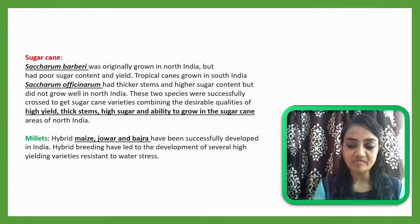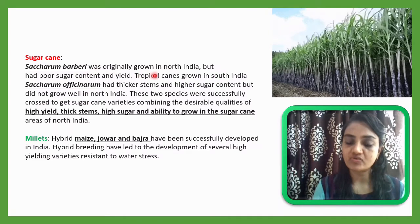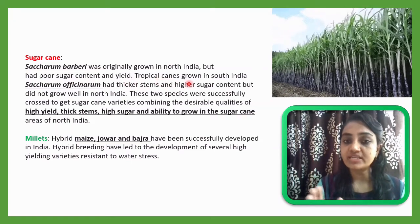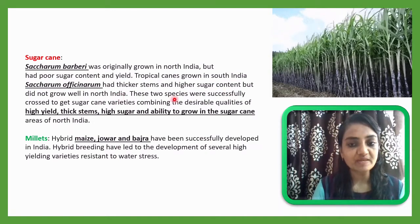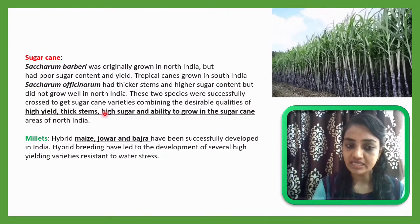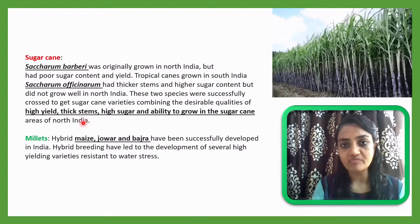The third crop discussed is sugarcane. Saccharum barberi, originally grown in North India, had poor sugar content and yield. Tropical cane grown in South India, Saccharum officinarum, had thicker stems and higher sugar content but did not grow well in North India. These two species were successfully crossed to get a sugarcane variety combining the desirable qualities of high yield, thick stem, high sugar content, and the ability to grow in North India.